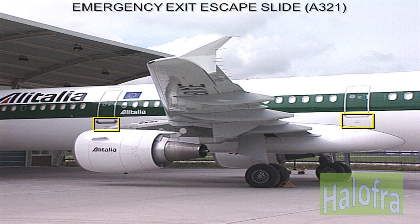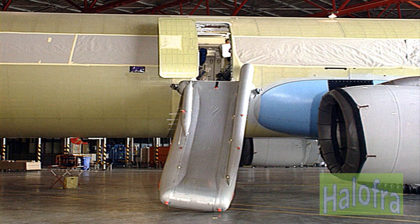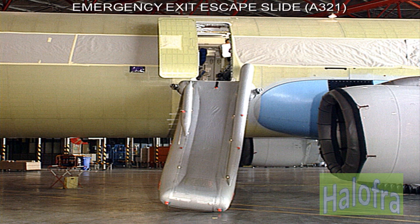The emergency exit escape slides are located in a container under each emergency exit door and inflation reservoirs are over each door in the overhead stowage compartment. The escape slides of the four emergency exits are of the single-lane type.